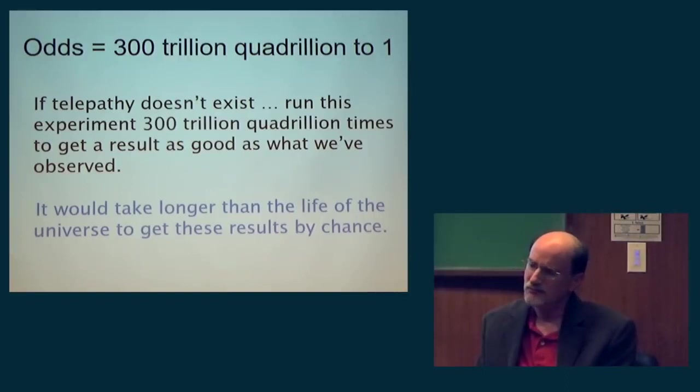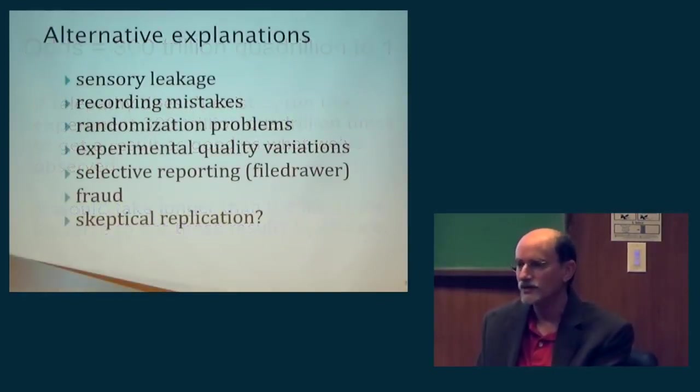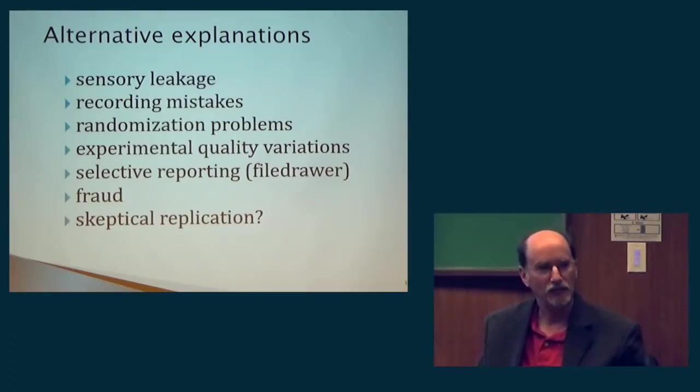So it seems reasonably certain that something like telepathy exists. A skeptic could say maybe these are not really well designed experiments, or maybe people aren't reporting all of the experiments. These are alternative explanations, some of which are built into the design and others are evaluated afterwards. They include things like could there have been leakage about the target from one person to the other, reporting mistakes, fraud on the part of experimenters or subjects.